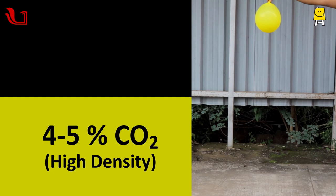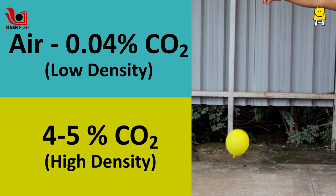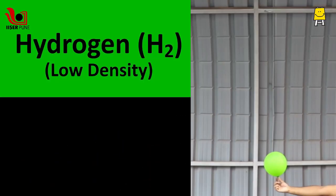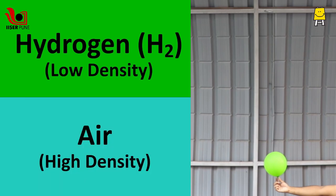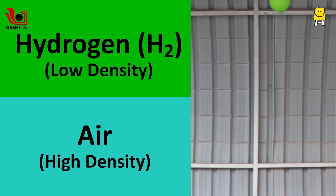The yellow balloon contains 4-5% carbon dioxide, whereas air contains only 0.04% carbon dioxide. Thus, the yellow balloon sinks as well. Hydrogen gas has much lower density than air, thus the green balloon goes up.